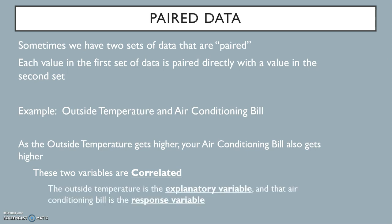In this case, the outside temperature is called the explanatory variable, and the air conditioning bill is called the response variable. That is because we expect that the air conditioning bill is responding to the increase or decrease in outside temperature, and the outside temperature is explaining the increase in the air conditioning bill.